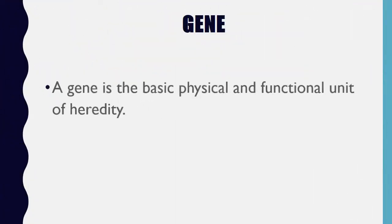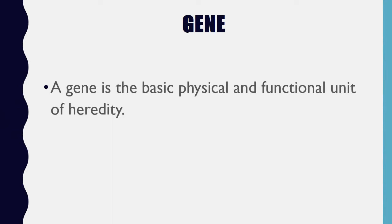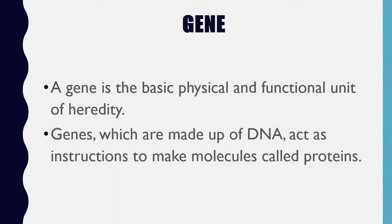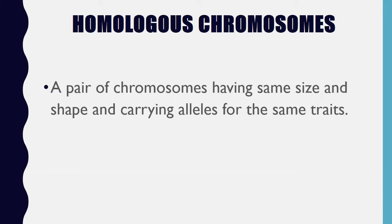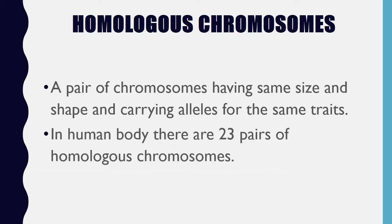Gene: a gene is the basic physical and functional unit of heredity. Genes, which are made up of DNA, act as instructions to make molecules called proteins. Homologous chromosomes: a pair of chromosomes having the same size and shape and carrying alleles for the same traits. In the human body there are 23 pairs of homologous chromosomes.